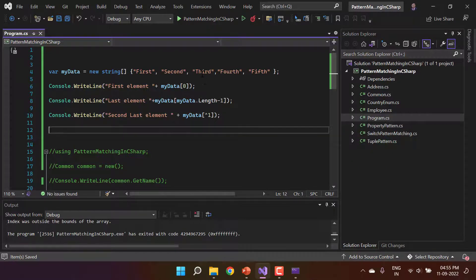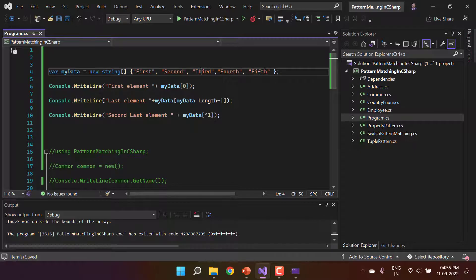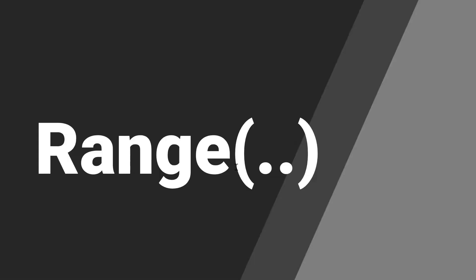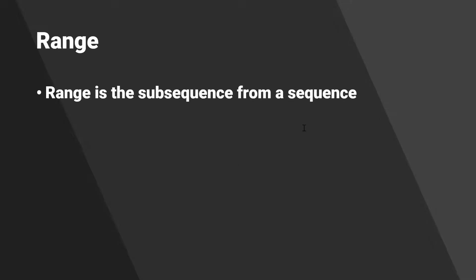If you need to get the third-last element, you can simply pass ^3 and you will get it. There is also one more very important concept in C# 8 — it is called range. This range operator is represented by two dots (..). A range is a subsequence extracted from a sequence, useful when you want to extract a sub-array.